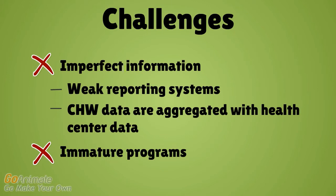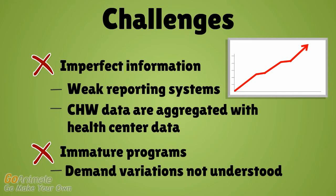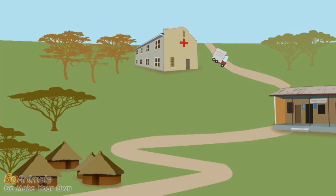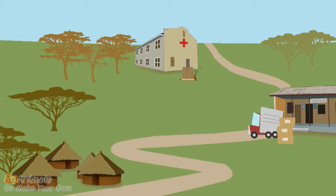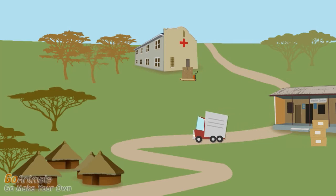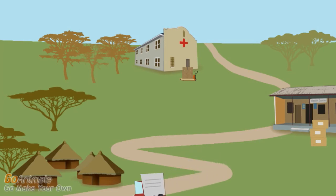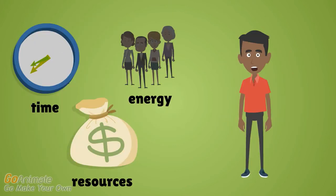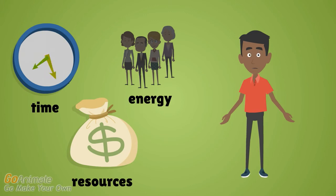CCM programs are often immature and variations in demand are not yet well understood, making it difficult to predict future trends. Thus, estimates are frequently based on good assumptions rather than precise data. There are also challenges related to the source and flow of CCM products. Often, there is no dedicated funding for CCM products and the program relies on essential medicines being available in the system. Frequently, these same essential medicines are in short supply and used for other conditions at other levels in the system. Community health workers are at the end of the supply chain and rely on what is available from health facilities. These factors lead to difficulties in coordinating and predicting the funding gap.